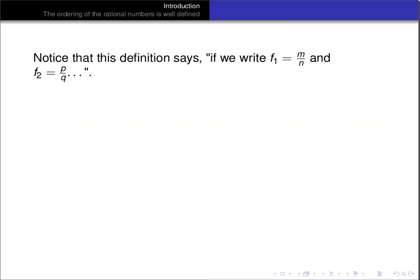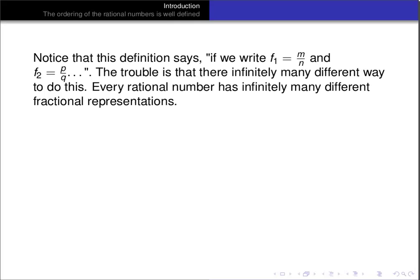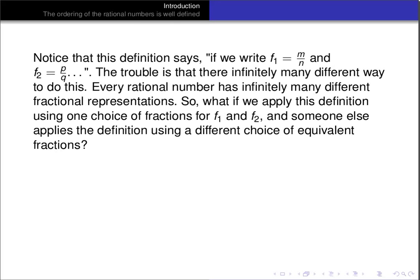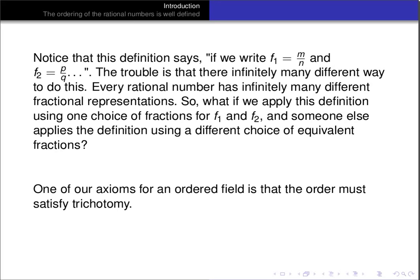Notice that the definition says: if we write f1 as m over n and f2 as p over q. The problem is that there are infinitely many different ways we can choose to do that, and every rational number has infinitely many different fractional representations. So the question is: what if we apply this definition using one choice of fractions, and somebody else applies the definition using a different choice of equivalent fractions? The comparison f1 less than f2 ought to be true regardless of which representations you choose, because one of our axioms for an ordered field is that the order must satisfy trichotomy. So if I choose one representation and get less than, it must be impossible that someone else chooses a different representation and gets greater than. We have to make sure the order is well-defined because we need trichotomy for this to be an ordered field.